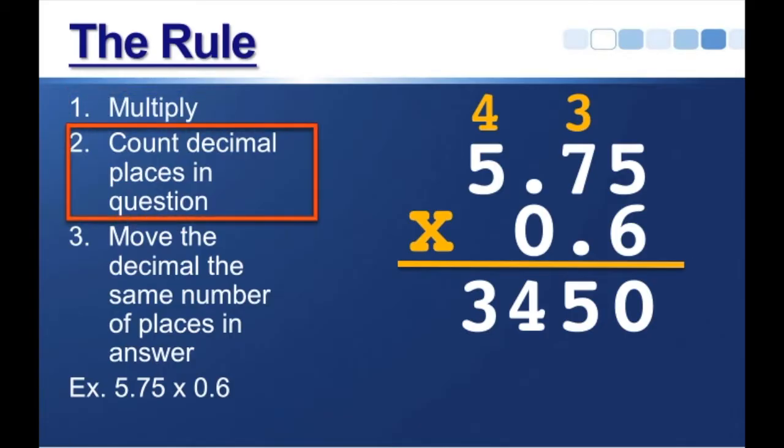Step two, count the decimal places in the question. Well, the decimal places are the places to the right of the decimal. How many of those do we have? We have 1, 2, 3. We've got a total of 3 places. We've got the 10th place here, the 100th place here, and the 10th place here. So to the right of the decimal, we have 1, 2, 3 numbers.